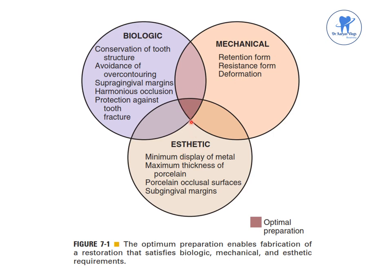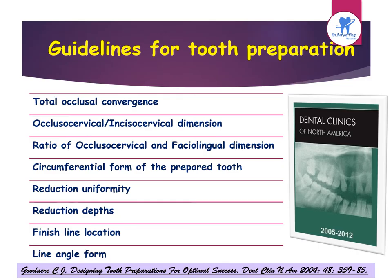The shaded area represents the optimal preparation, which enables fabrication of a restoration satisfying biologic, mechanical, and aesthetic requirements. According to Dental Clinics of North America by Goodacre et al. in 2004, guidelines for tooth preparation include: total occlusal convergence, occlusal-cervical or incisor-cervical dimension, ratio of occlusal-cervical and facial-lingual dimension, circumferential form, reduction uniformity, reduction depth, finish line location, and line angle form.